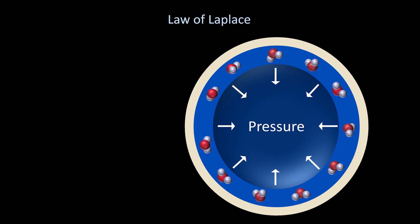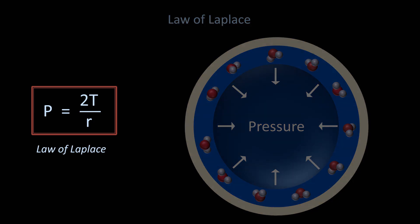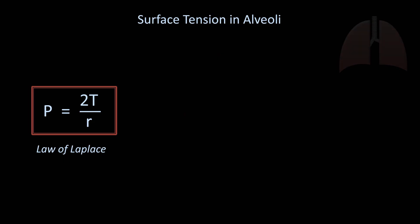The law of Laplace relates the surface tension to the enclosed pressure. It states that the pressure inside the spherical bubble is equal to 2 times the tension divided by the radius. Let's take a look in the lungs to see how this is significant.